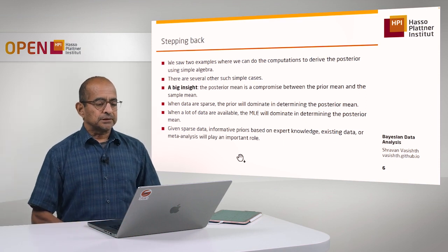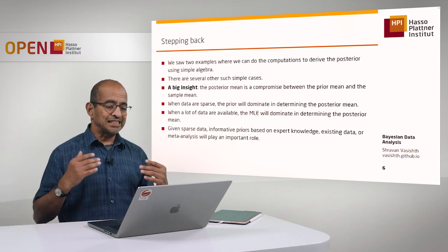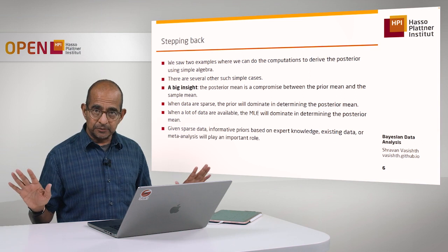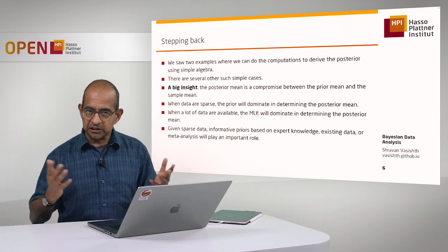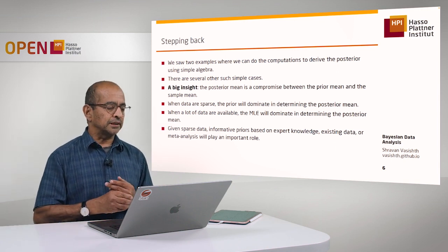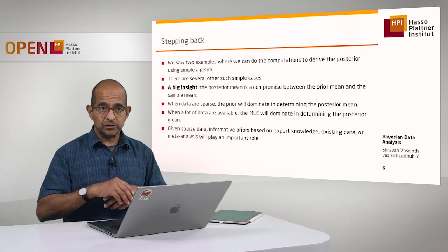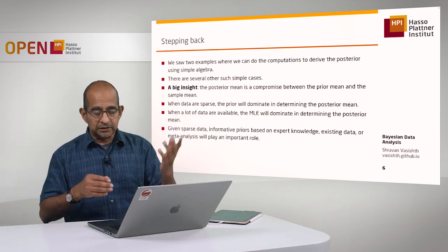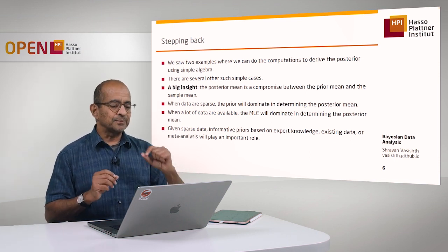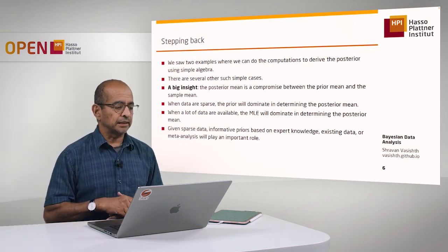Now it's time to step back and think about what we have achieved. We've seen two examples of conjugate analyses using simple algebra — literally just addition and multiplication, with not much computation involved. There are other cases like this, such as the normal-normal conjugate case. What's important is that these examples illustrate that the posterior mean is going to be a compromise between the prior and the likelihood.